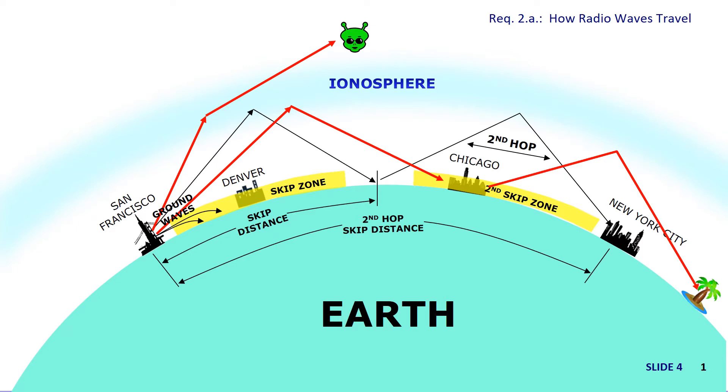There are two other interesting things that can happen with skip. Let's say I position my antenna in such a way as to lower the angle my radio waves travel to the ionosphere. Then they will reflect back down at a lower angle, making them go much farther. Now my first skip hop got my signal all the way to Chicago, while on the first try it didn't go quite as far. And on the second hop, the signal travels over New York City to somewhere in the Atlantic Ocean. Who knows? Maybe a tropical island.